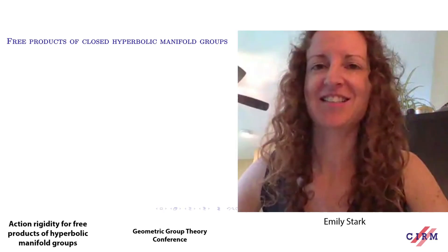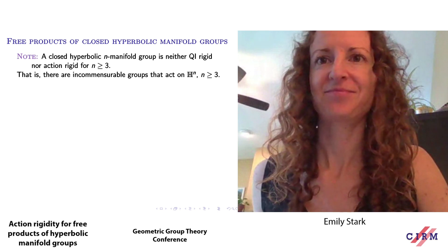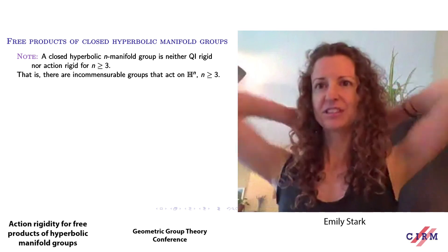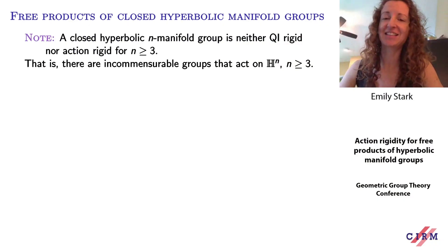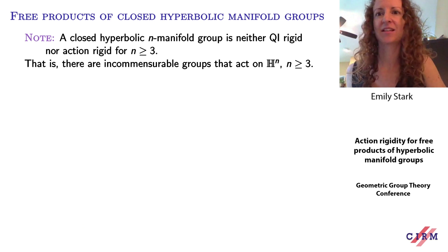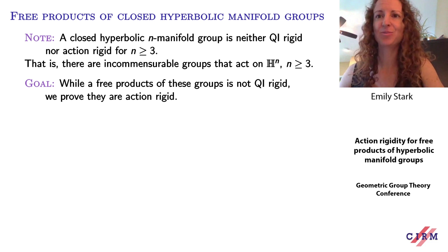In the more recent work, we studied the class of free products of closed hyperbolic manifold groups. Note that the fundamental group of a closed hyperbolic n-manifold is not quasi-isometrically rigid, and is not action-rigid for all n at least three, because there are groups that act on hyperbolic n-space that are not commensurable. So you can't deduce algebraic information from either quasi-isometry or from having a common model geometry. However, free products of these manifold groups are not quasi-isometrically rigid, but the free products are action-rigid, and thus you get quasi-isometric groups with no common model geometry.